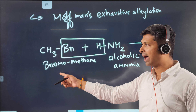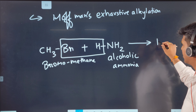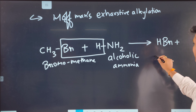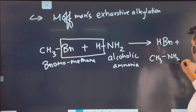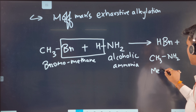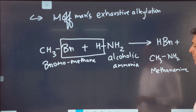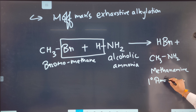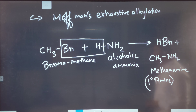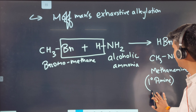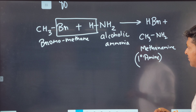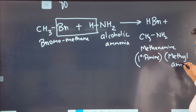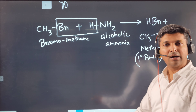H and Br combine to form HBr, and NH₂ attaches to the carbon, giving CH₃NH₂ — methanamine. Nitrogen is directly connected to one carbon, so this is a primary amine. The IUPAC name is methanamine and the common name is methylamine.